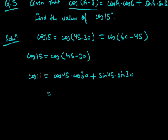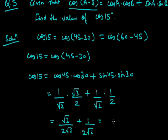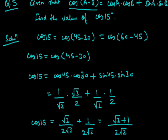So cos 15° = cos(45° − 30°) = cos 45° · cos 30° + sin 45° · sin 30°. Substituting known values: cos 45° = 1/√2, cos 30° = √3/2, sin 45° = 1/√2, sin 30° = 1/2. So cos 15° = (1/√2)(√3/2) + (1/√2)(1/2) = √3/(2√2) + 1/(2√2). Since the denominators are the same, cos 15° = (√3 + 1)/(2√2).